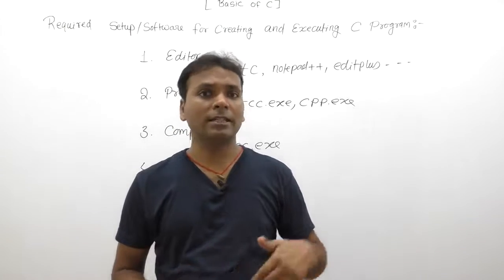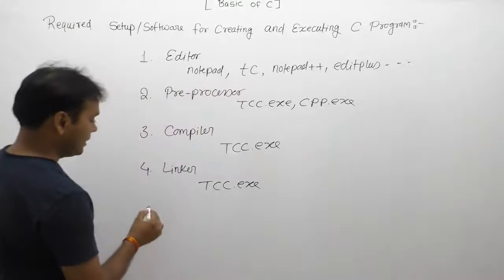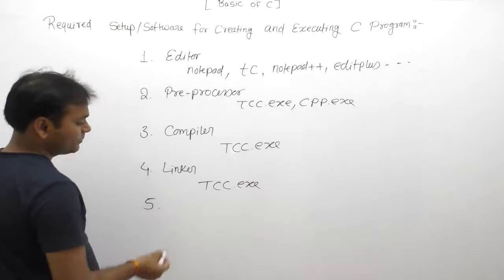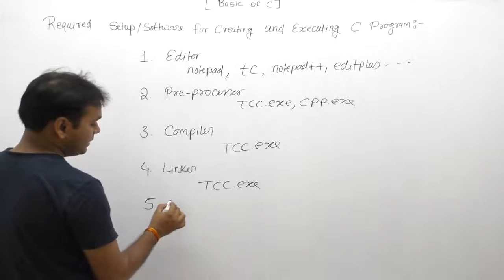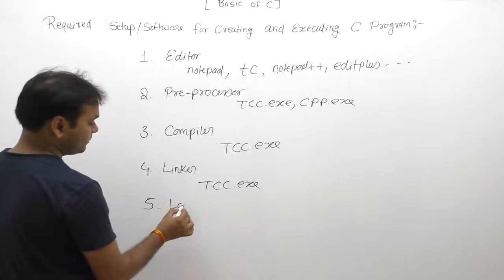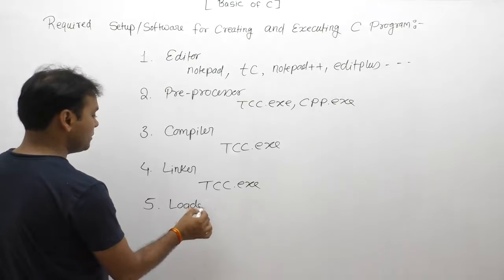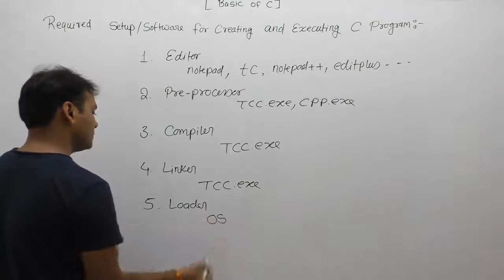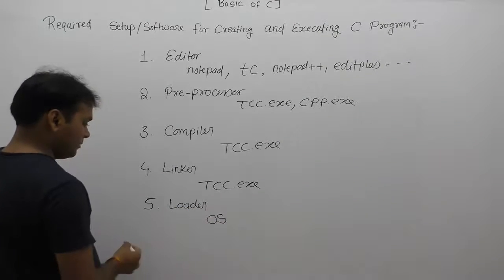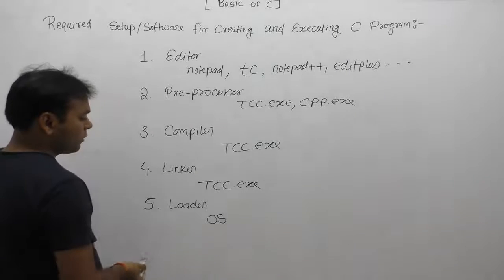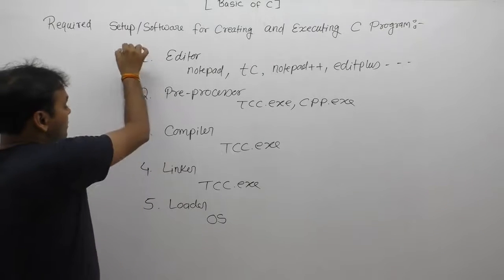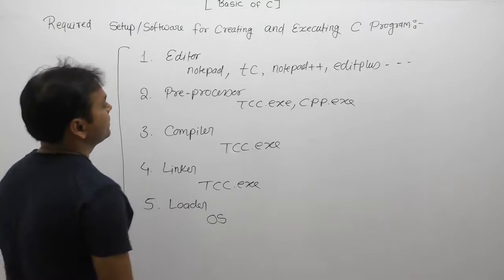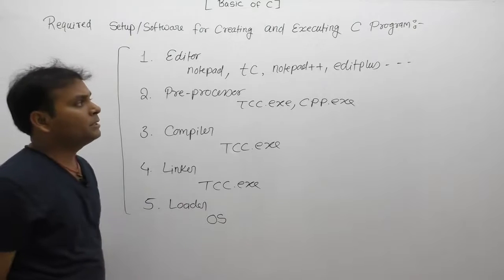The fifth required software is the loader. The loader is a part of the operating system, which is by default automatically available. These are the required software tools for completing any C program.